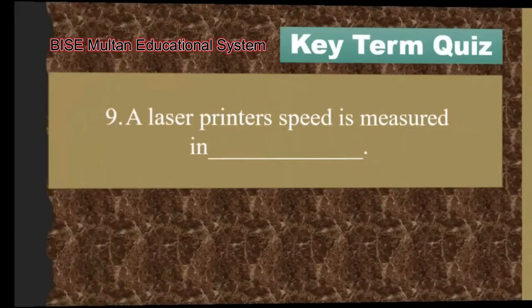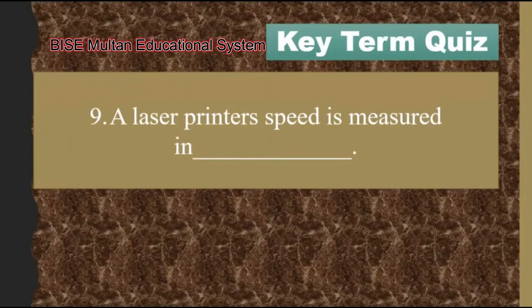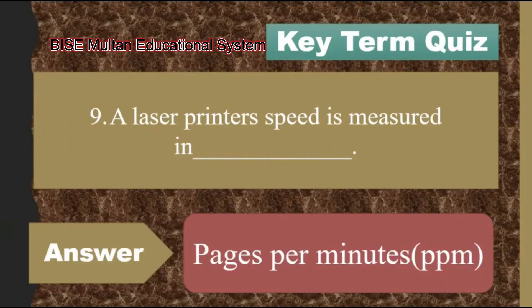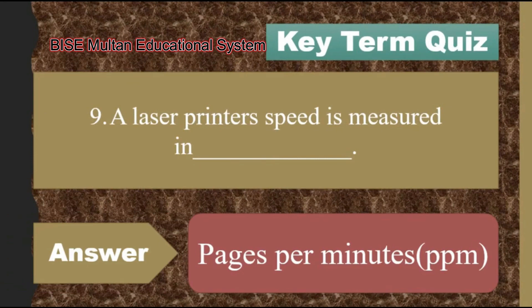Question number 9. A laser printer's speed is measured in blank. The answer is pages per minute, or PPM.